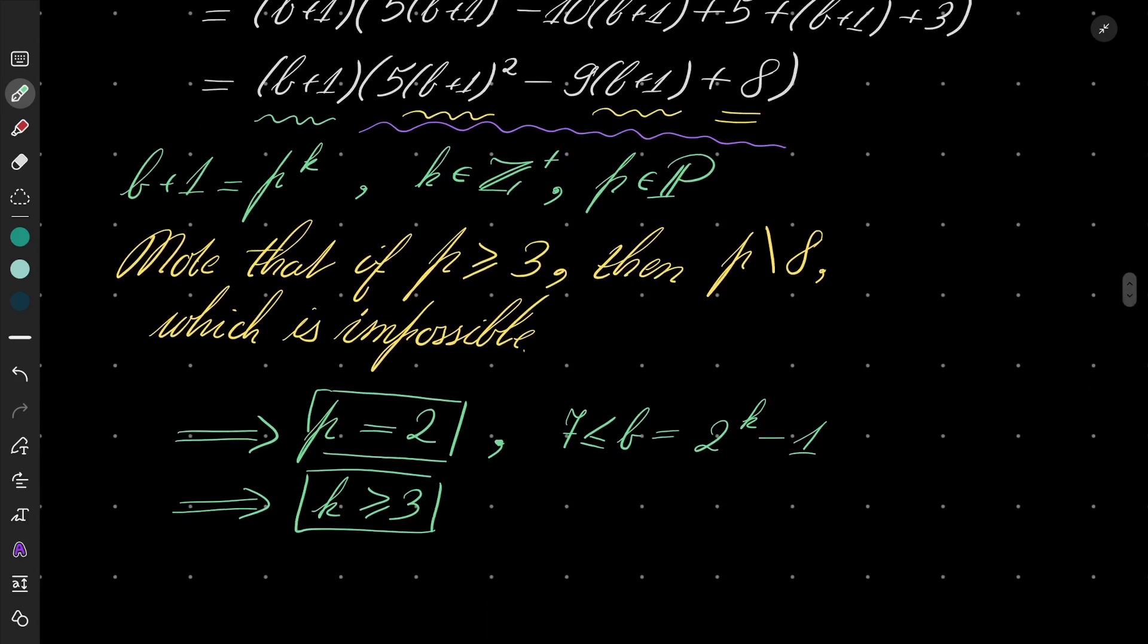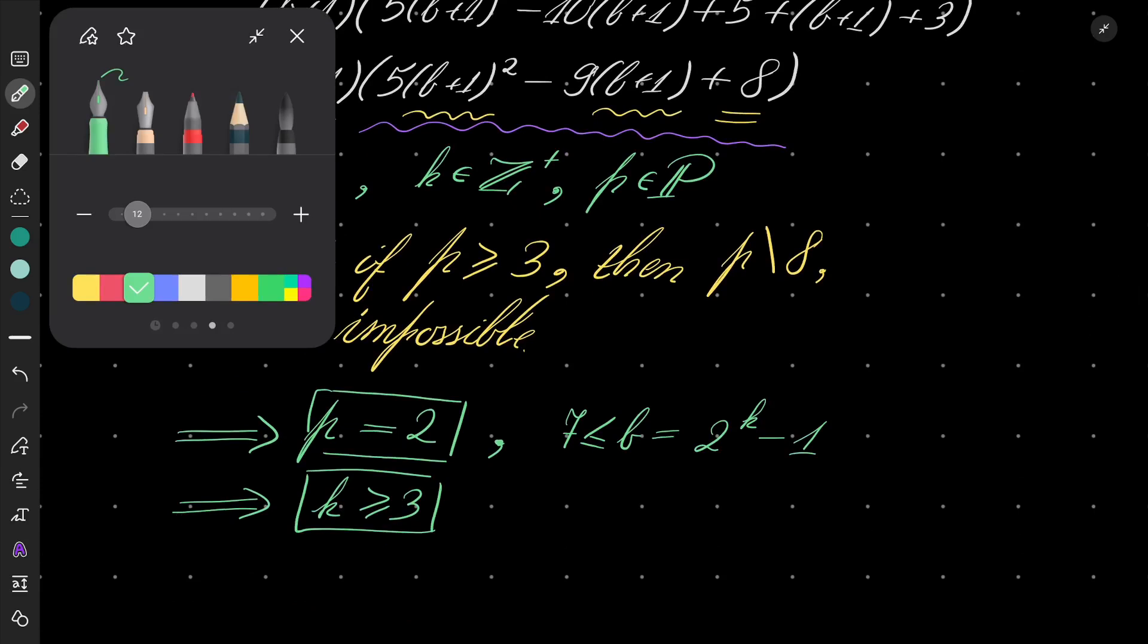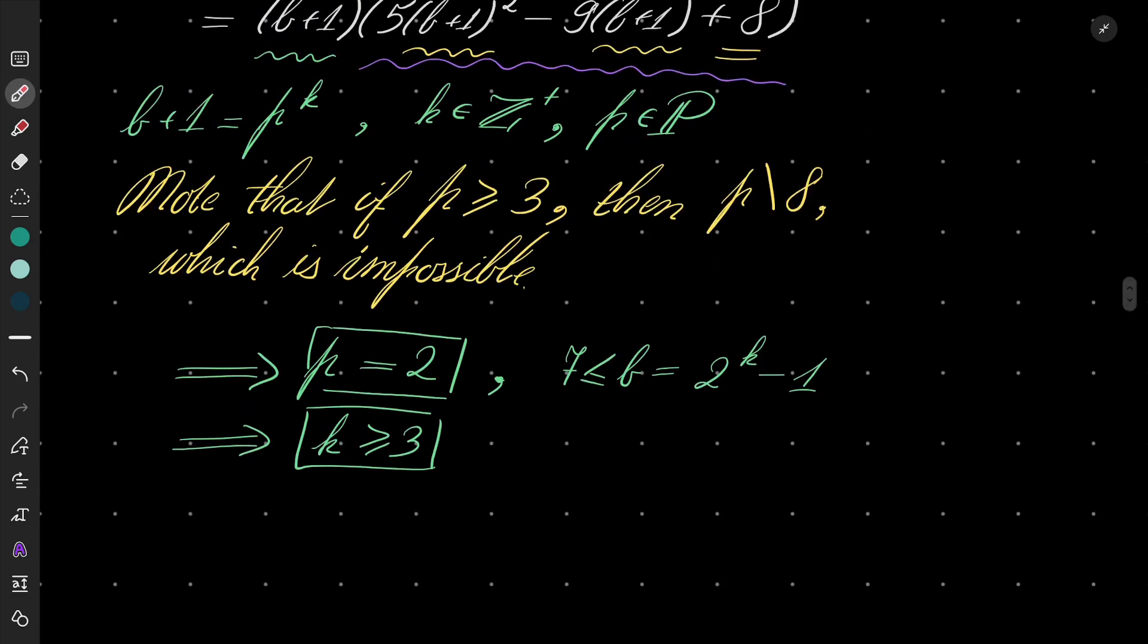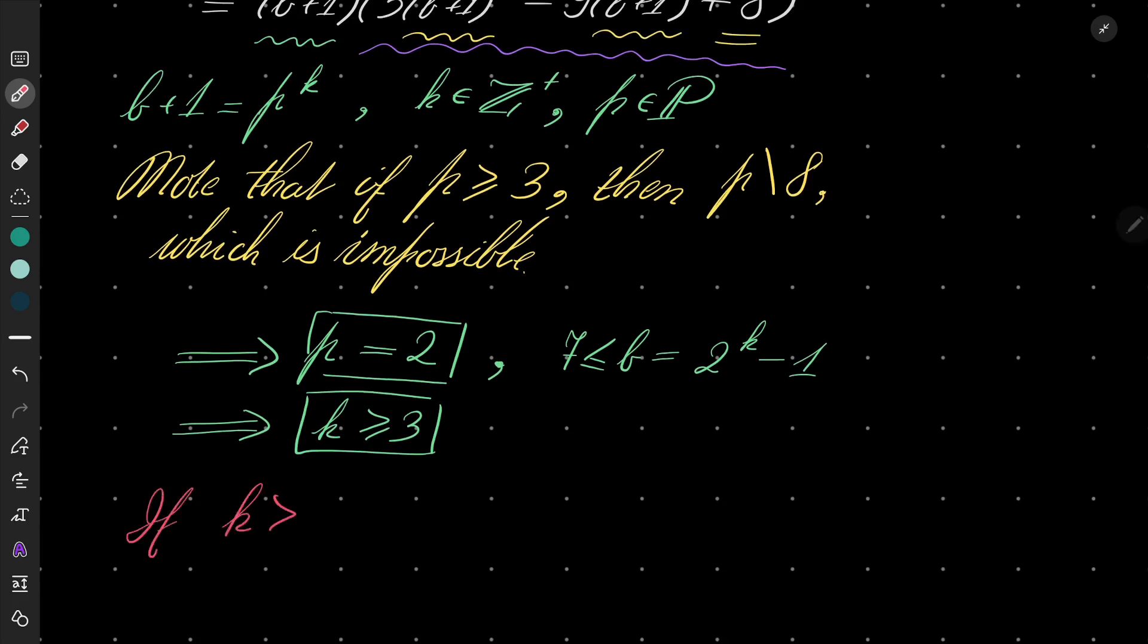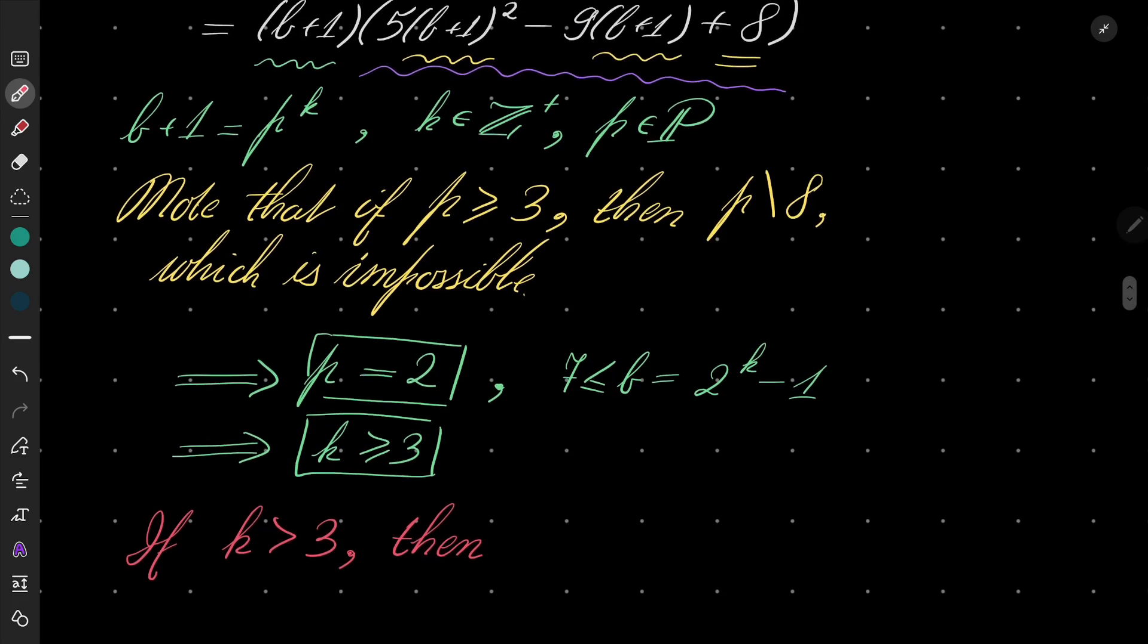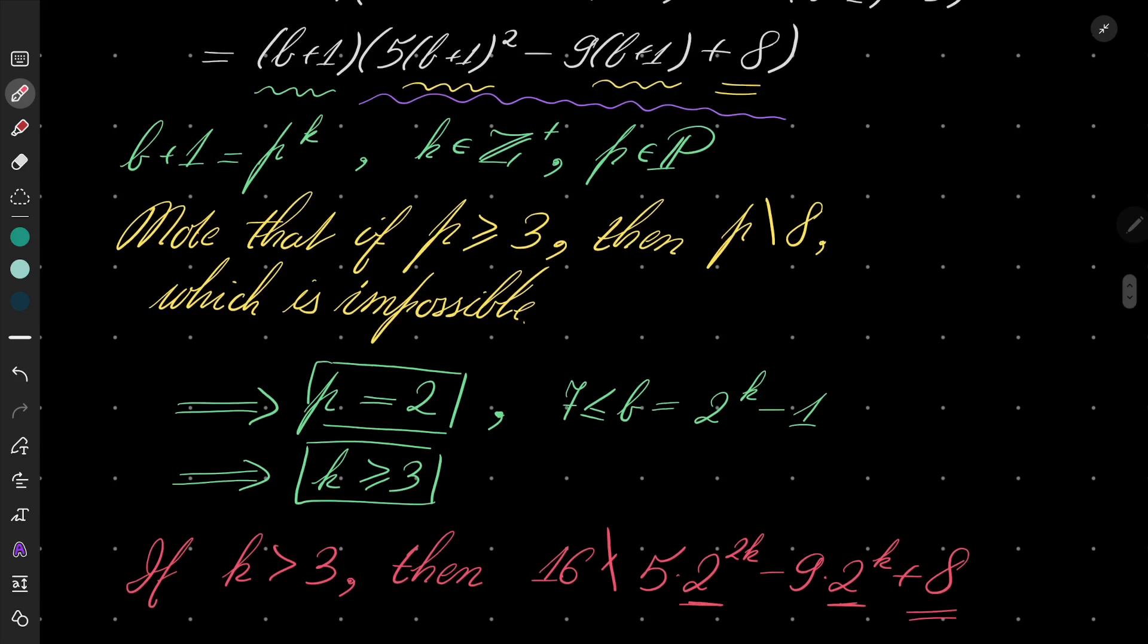But now let's take a look. Can K be really greater than 3? If K is strictly greater than 3, then what happens? Then 16 does not divide 5·2^(2K) - 9·2^K + 8. Because this is divisible by 16, this is divisible by 16 as well, but 8 isn't. So 16 doesn't divide the right-hand side, the second parenthesis.